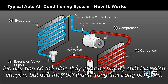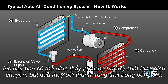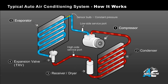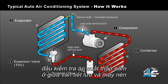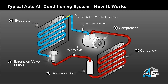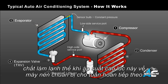As you can see, the liquid arrows turn back into a gas, as indicated by bubbles. The low side service port is located here, between the expansion valve and the compressor. The low pressure gas then returns to the compressor for another cycle.